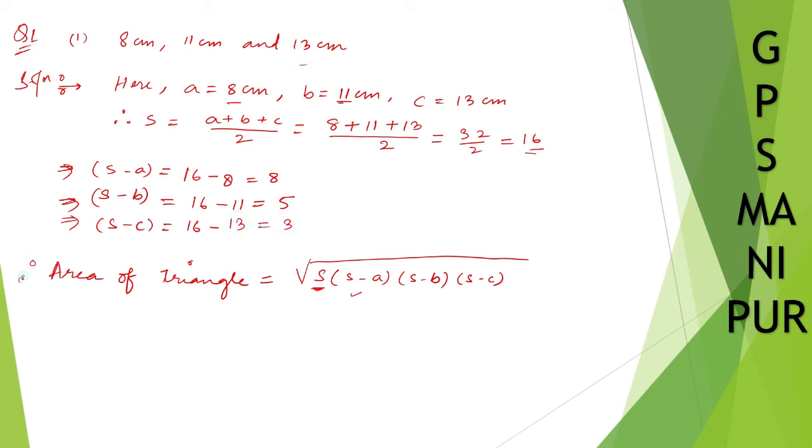So therefore area of the triangle is equal to, now put in this equation. So draw the root. Value of S is 16, so write down 16 into S minus A is 8, write down 8 into S minus B is 5, so write down 5 into S minus C is 3, so write down 3.